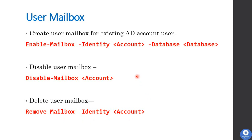With Disable-Mailbox, you temporarily disable the mailbox. The AD account will still exist but the user cannot log in to the mailbox. With Remove-Mailbox, the mailbox is deleted from Exchange and the AD account is also deleted. To recover a removed mailbox, you must first restore the AD account and then restore the mailbox. In disabled mailbox, the mailbox is only temporarily disabled; once re-enabled, the user can access their email again.